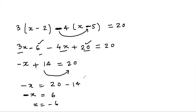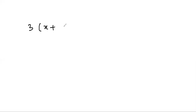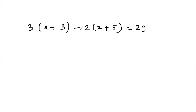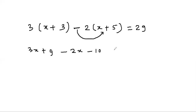Let's see another example: 3(x + 3) - 2(x + 5) = 29. Here again there is a minus sign, so due to this minus sign the plus sign inside will change. Expanding: 3x + 9 - 2x - 10 = 29.